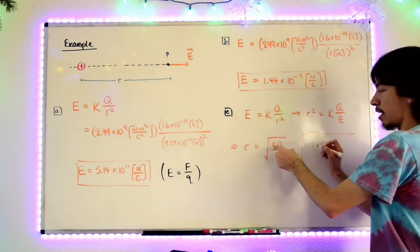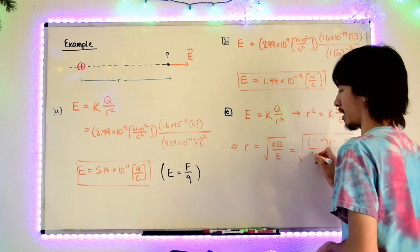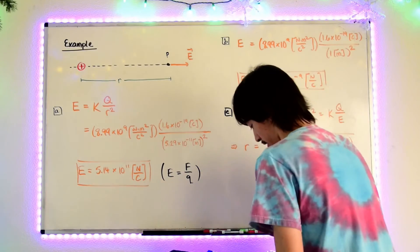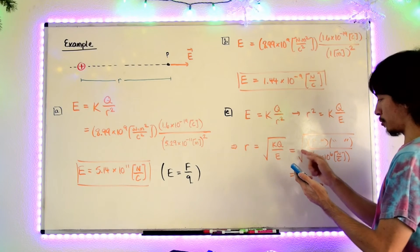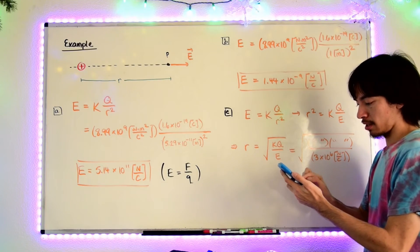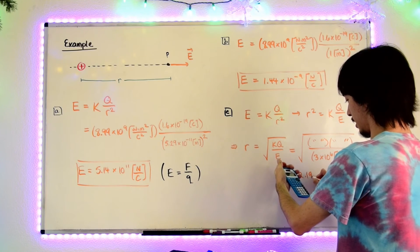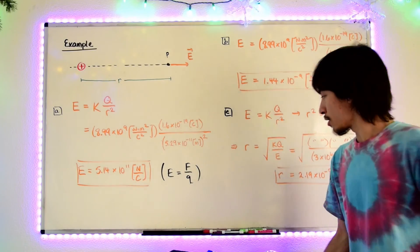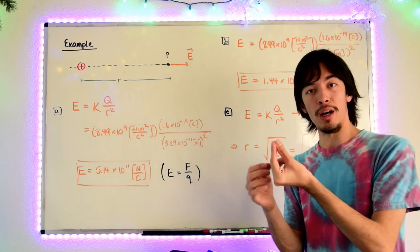We just plug in the values. K and Q will be the same values as before, and then divided by E, which is 3 times 10 to the 6th newtons per coulomb. So we have 3 times 10 to the 6th in the bottom, multiplied by coulombs constant and the charge of the proton. Don't forget to square root this. So we get R equals 2.19 times 10 to the minus 8th meters — a very, very small distance. This gives us a sense of the size of the electric field from these little particles that we can't see.